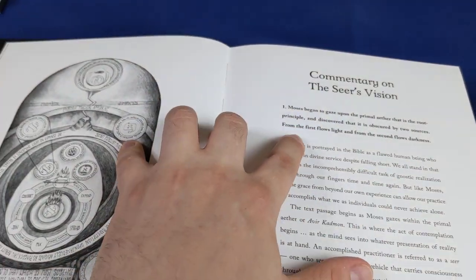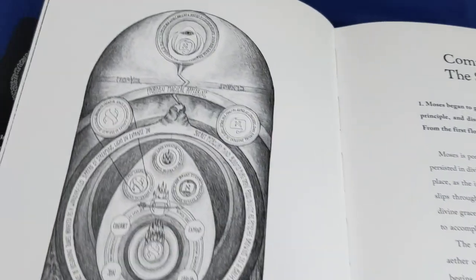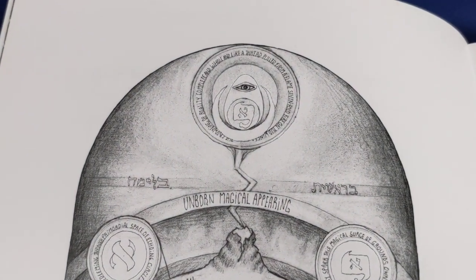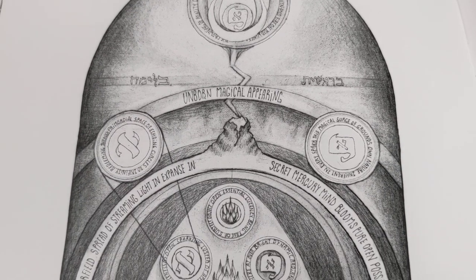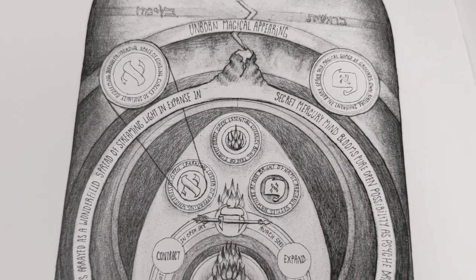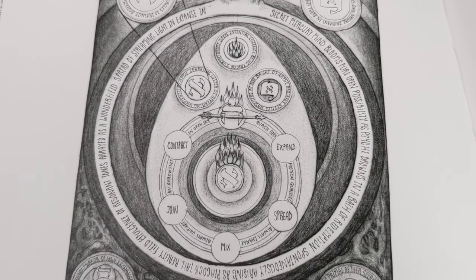And then he starts off with this commentary of the middle section, the seer's vision. As I was just saying to you, he calls himself an esoteric cartographer. And with right, these are all the maps that he creates.